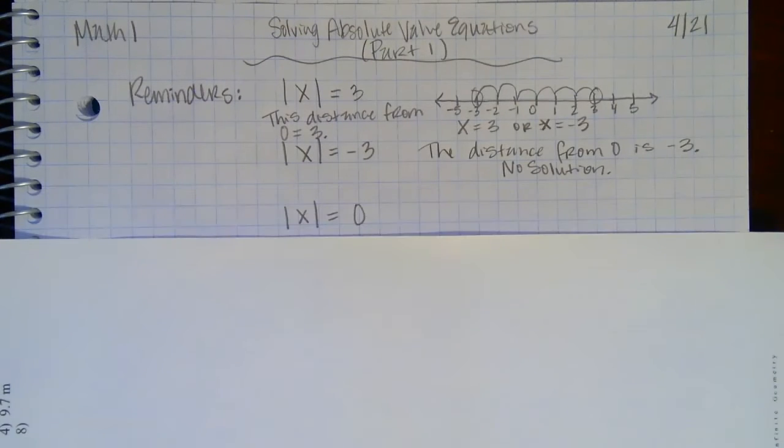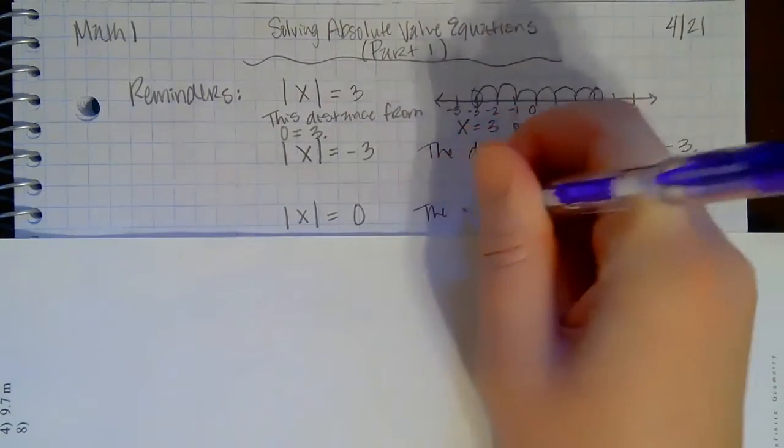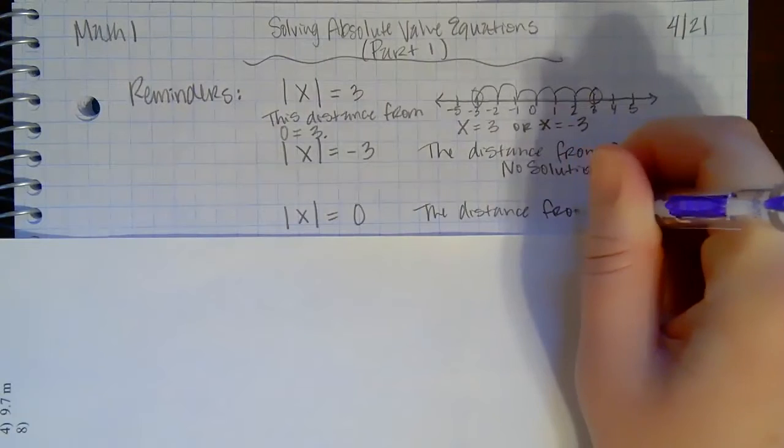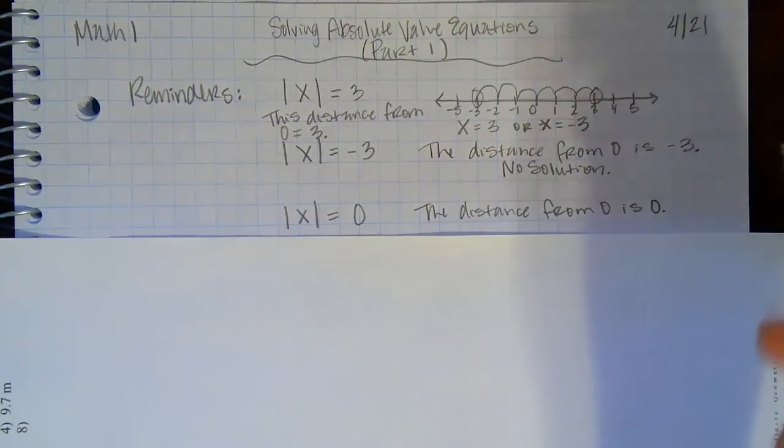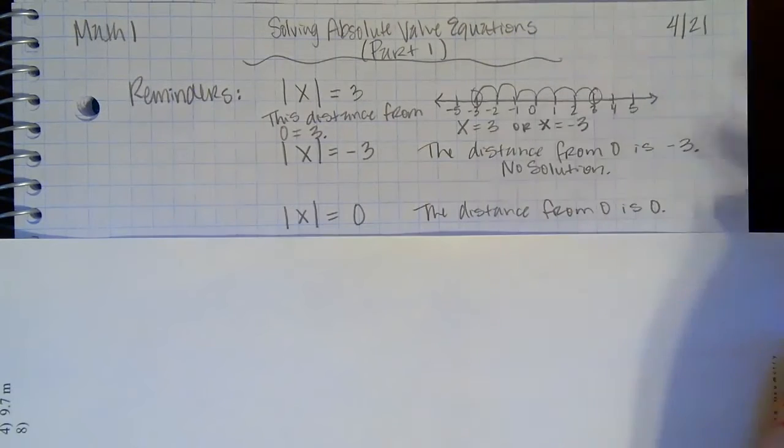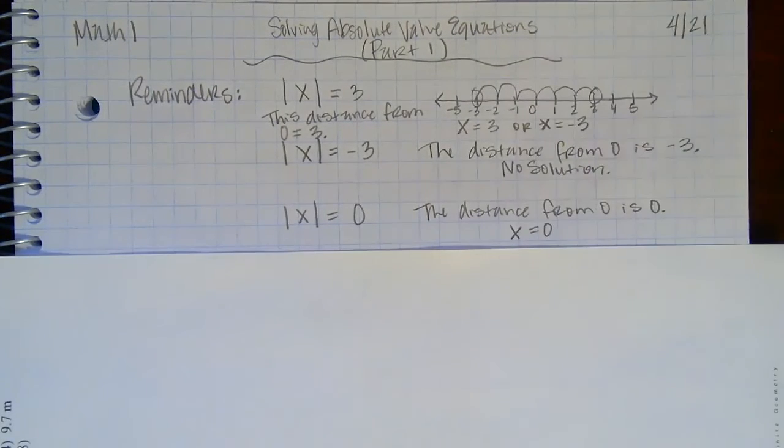And then if they tell you that the absolute value of something is equal to 0, they're telling you the distance from 0 is 0. So if you look back at our number line, I'm starting at 0 and I'm going 0, obviously I'm still going to end at 0. So I only have one solution; it's 0.